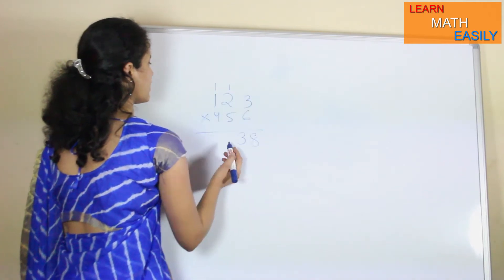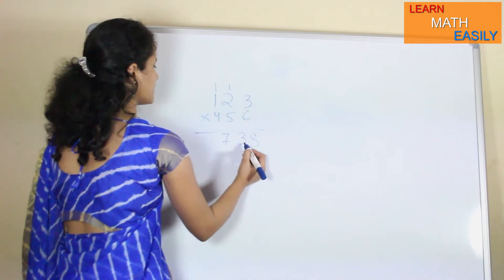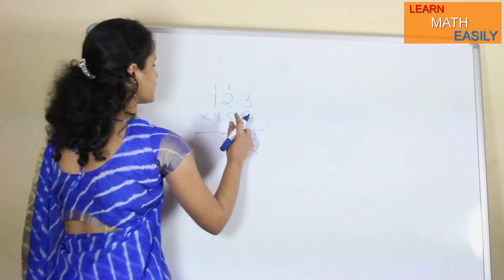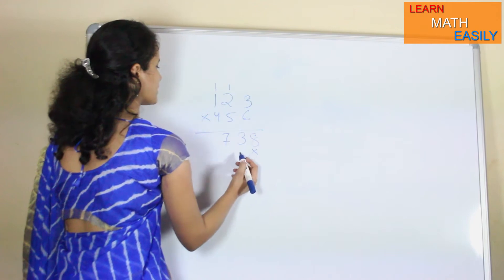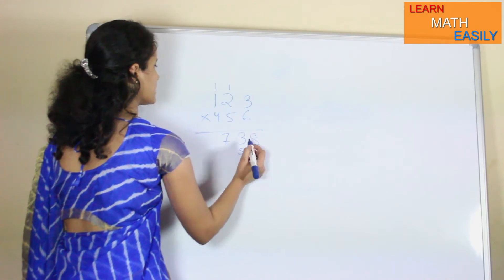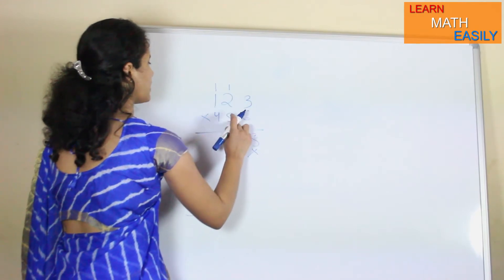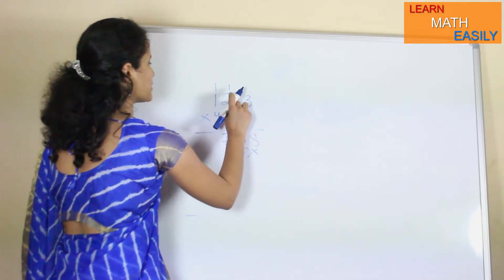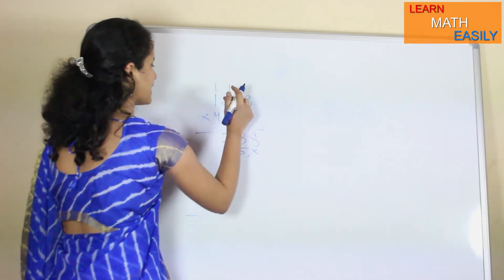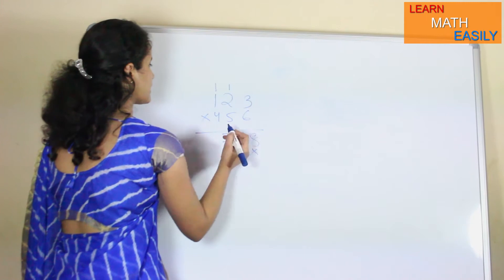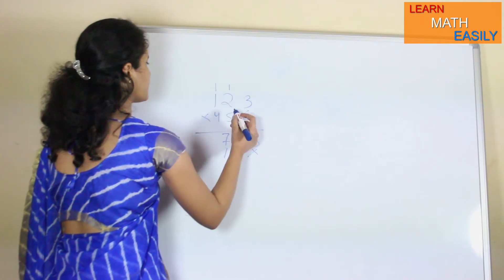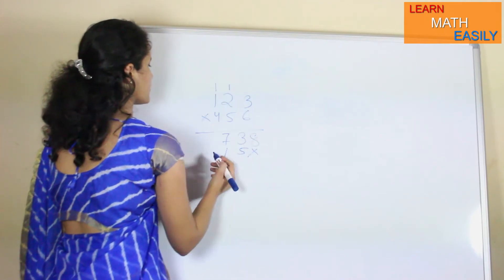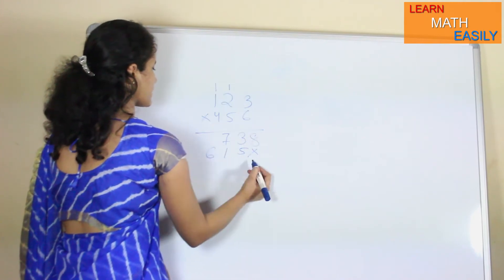6 multiplied by 1 gives 7 here. Then 5 multiplied by 3 gives 15, carry over 1. 5 multiplied by 2 gives 10, plus carry 1 gives 11, carry over 1. 5 multiplied by 1 gives 6 here.